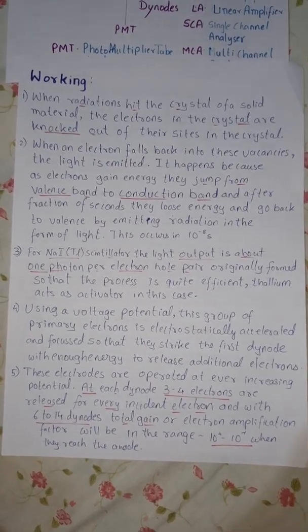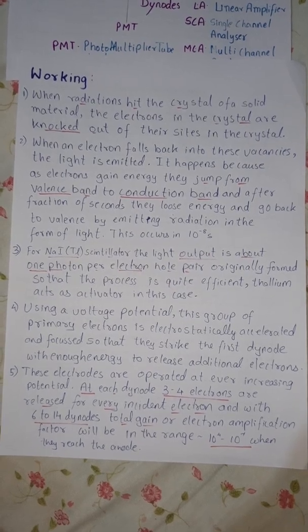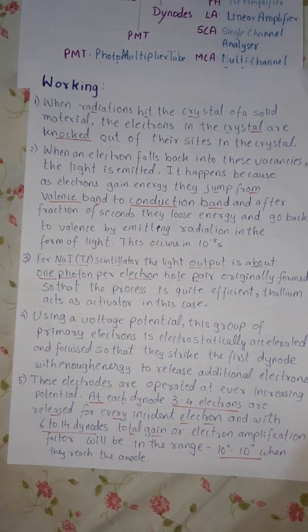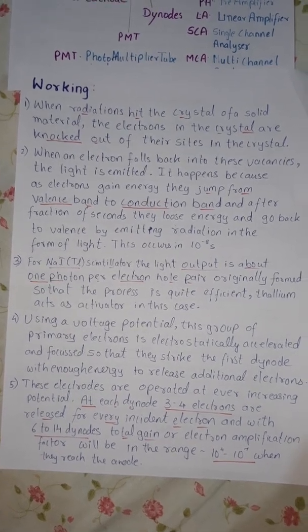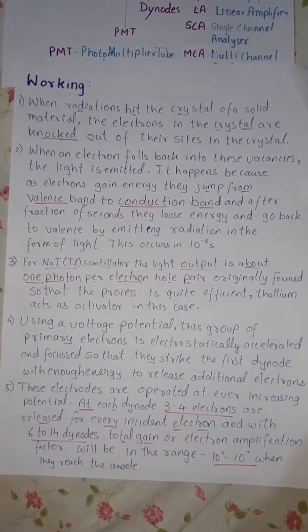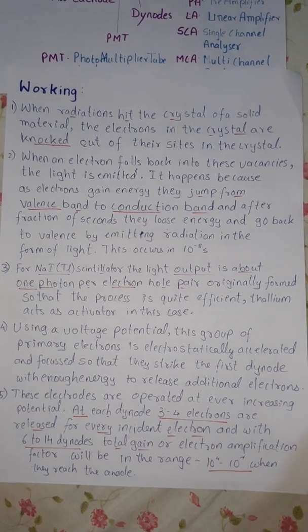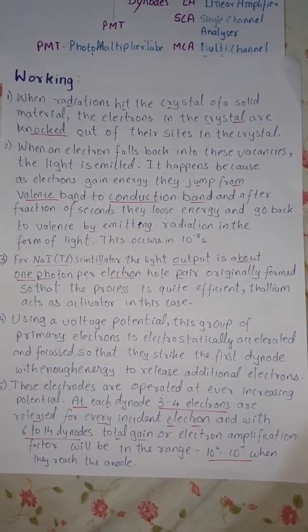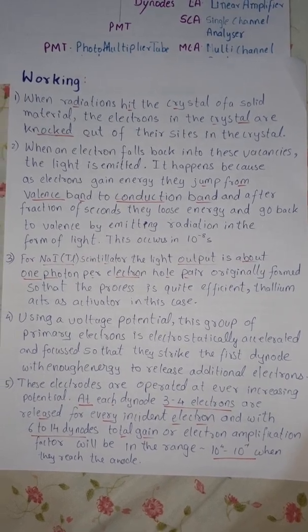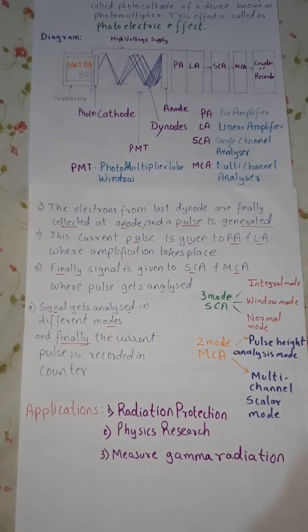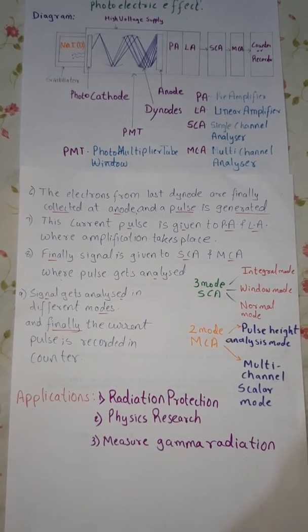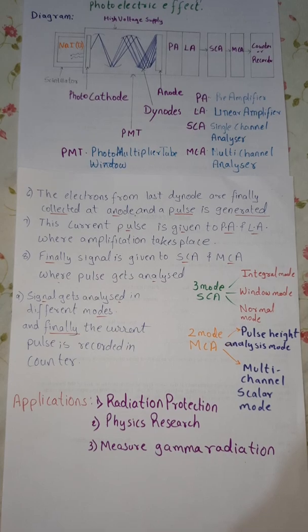These electrons are operated at ever-increasing potential. At each dinode, 3 to 4 electrons are released for every incident electron and with 6 to 14 dinodes, total gain or electron amplification factor will be in the range of 10 raised to 4 to 10 raised to 7 when they reach the anode.